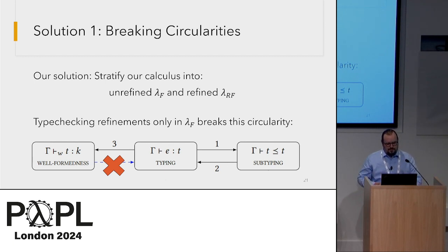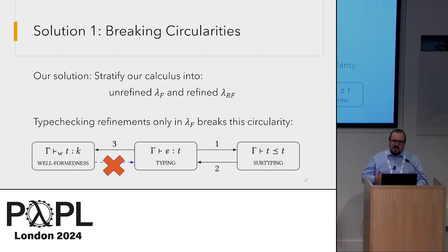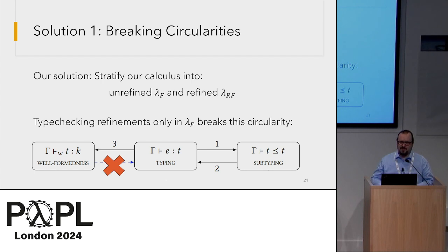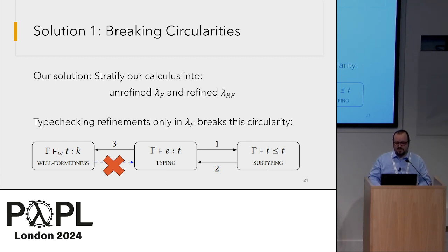In our approach, we stratified our calculus into two layers: the full refined system Lambda RF, and also an unrefined Lambda F, which is analogous to System F with features from our language. Lambda F type checking happens only with respect to unrefined base types, meaning we can check that our refinements are Boolean-typed expressions without using the full Lambda RF, thus breaking the circularity.